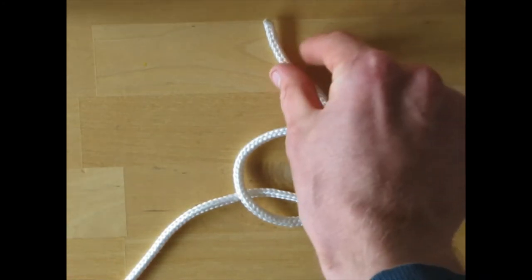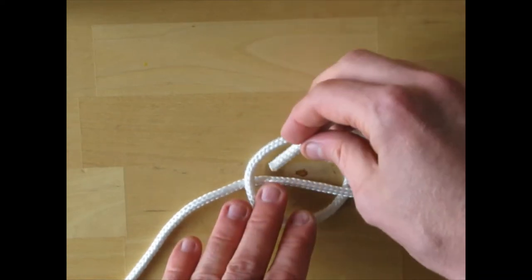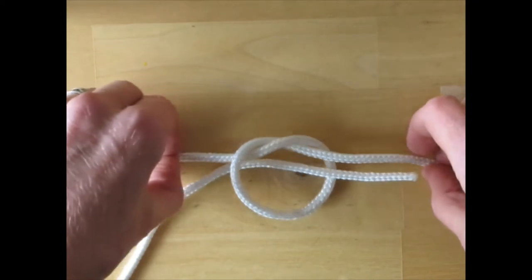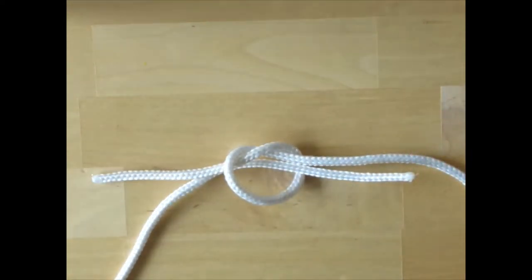Take the free end at the top and bring it down through the loop like this so that it stays on the far side of the bottom rope. Make a knot like this and pull to about this size.